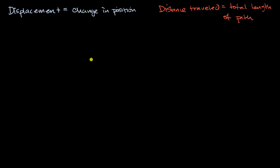Let's introduce a little bit of calculus. Let's say that we have a particle's velocity function, where our velocity as a function of time is equal to five minus t. This is a one-dimensional velocity function — let's say it's telling us our velocity in the horizontal direction. And in one dimension, that too can be a vector quantity: if it's positive, it's moving to the right; if it's negative, it's moving to the left. So it has a direction.